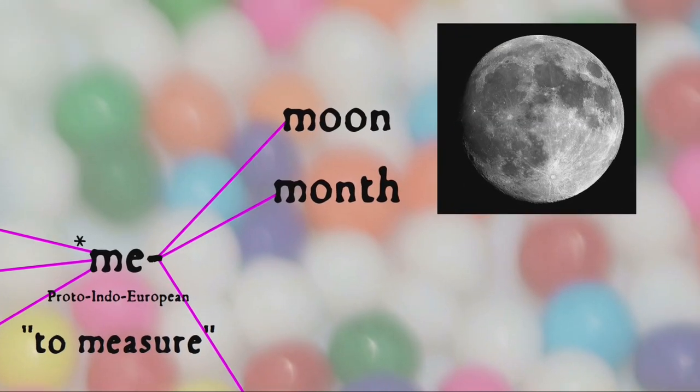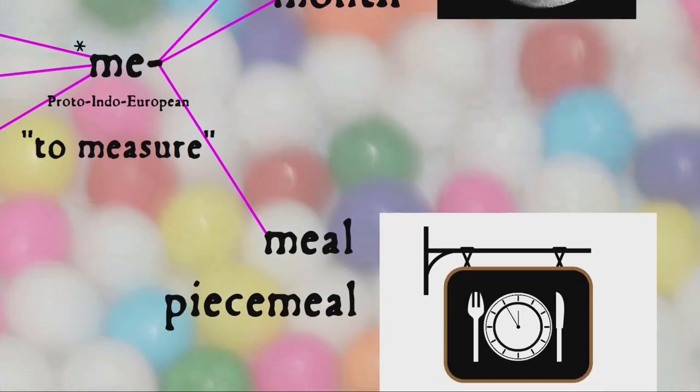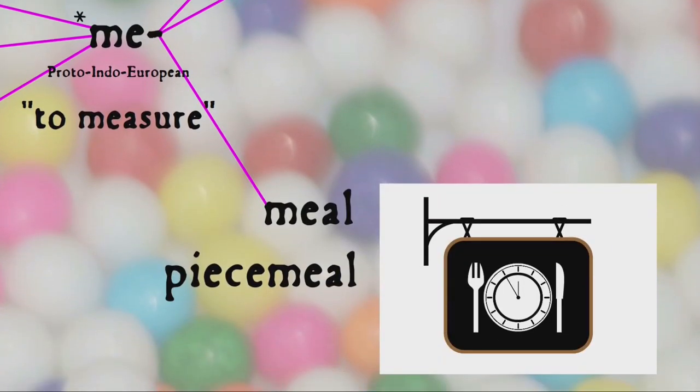which also gives us moon and month — thus measures of time — and meal, a time appointed for eating, whose earlier sense of measure or quantity is still preserved in the compound word piecemeal.